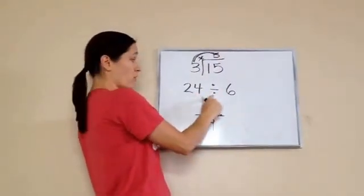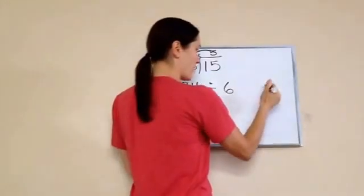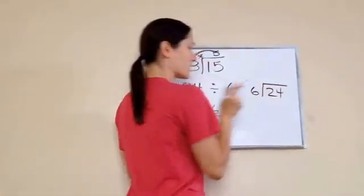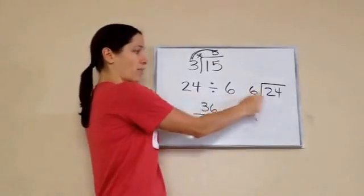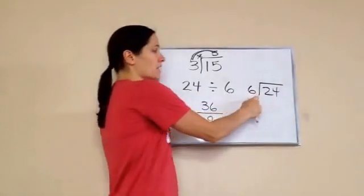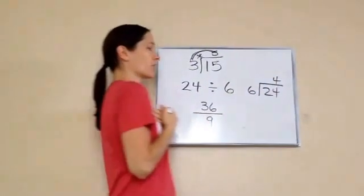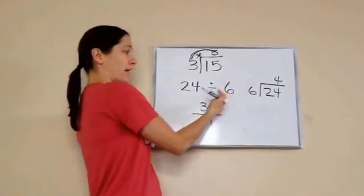This one is written 24 divided by 6. But I'm going to move over here and take 24 and divide it by 6. So this is the same problem, just written in a different way. 6 goes into 24, 4 times. Very good.